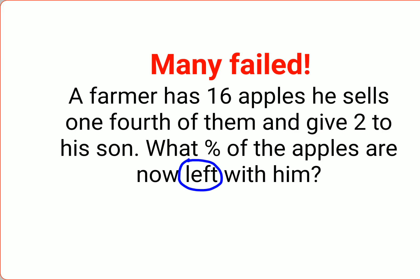They are asking 'left'. So basically, he had originally 16, and then he sold one-fourth of the original 16, and from there he gave 2 to his son as well. So basically,